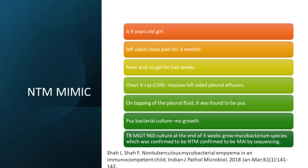A nine-year-old girl had left-sided chest pain for three months, fever and cough for two weeks, and a massive left-sided pleural effusion — everything pointing to TB. On tapping, the fluid was pus. Pus culture was sterile. TB MGIT culture at three weeks grew a Mycobacterium species confirmed by PCR and sequencing to be Mycobacterium avium. The treatment for Mycobacterium avium is very different — instead of standard HRZE, you add a macrolide like clarithromycin or azithromycin and prefer amikacin. So not every pleural effusion means TB; it could be NTM.